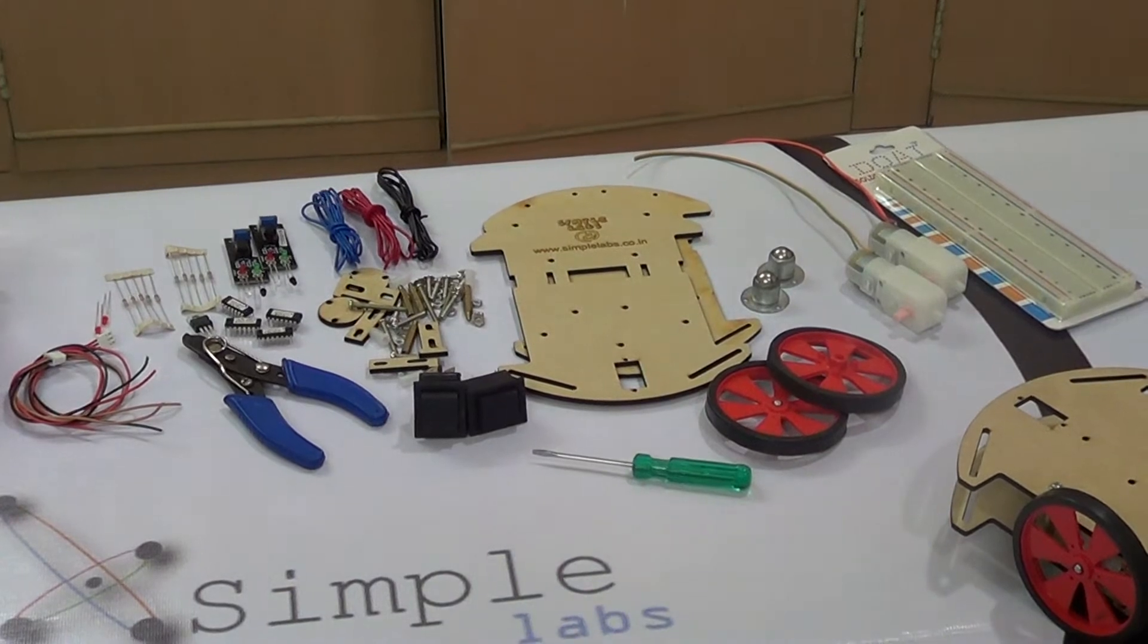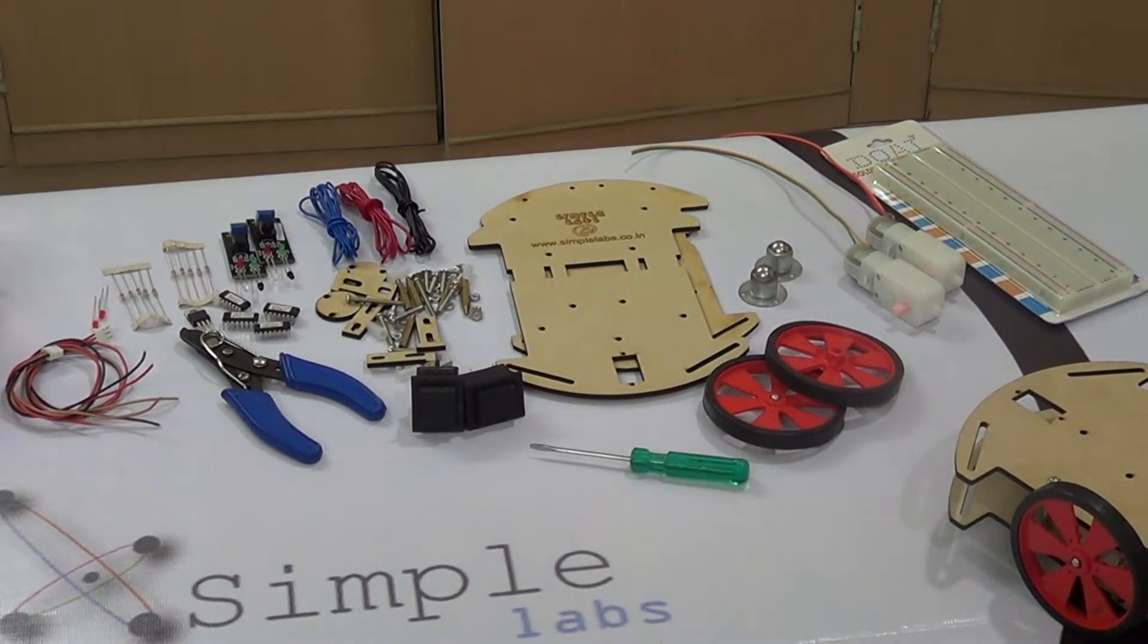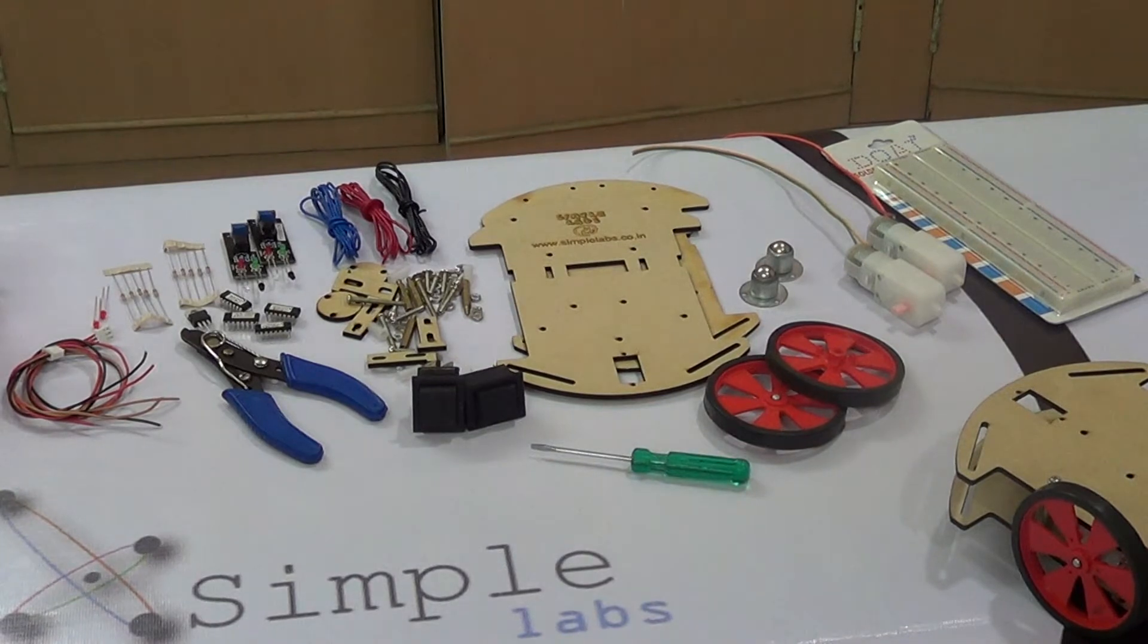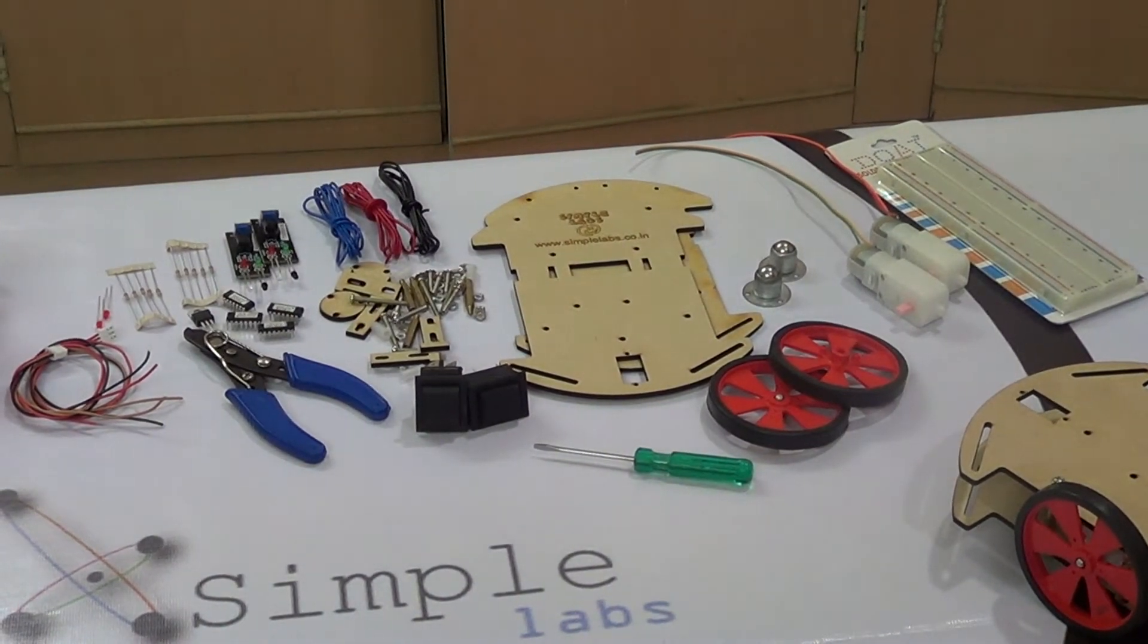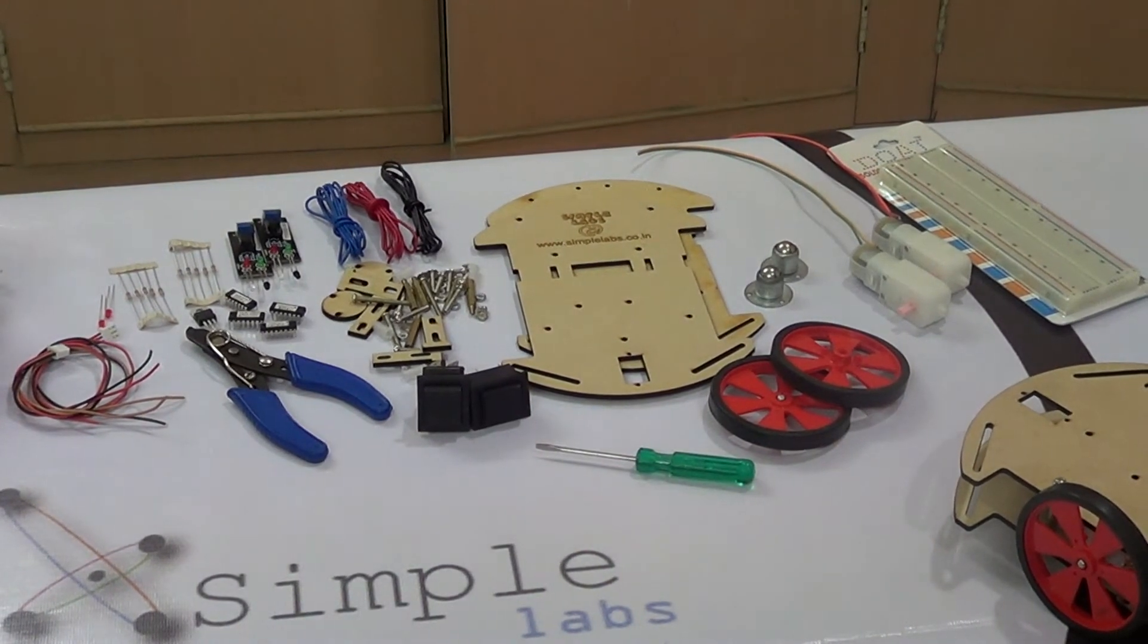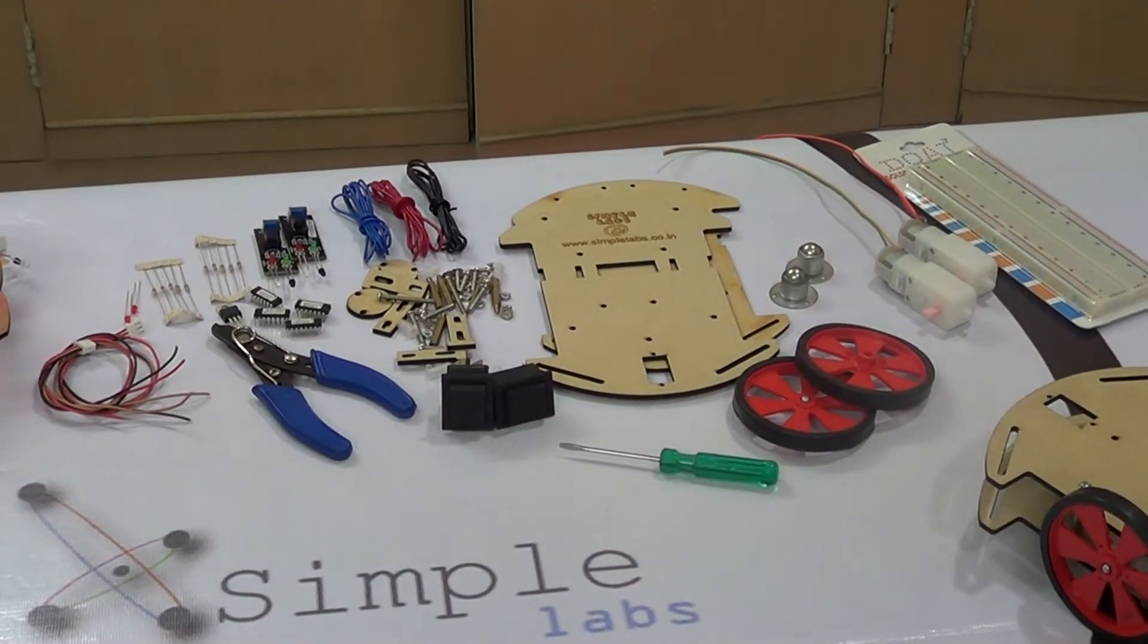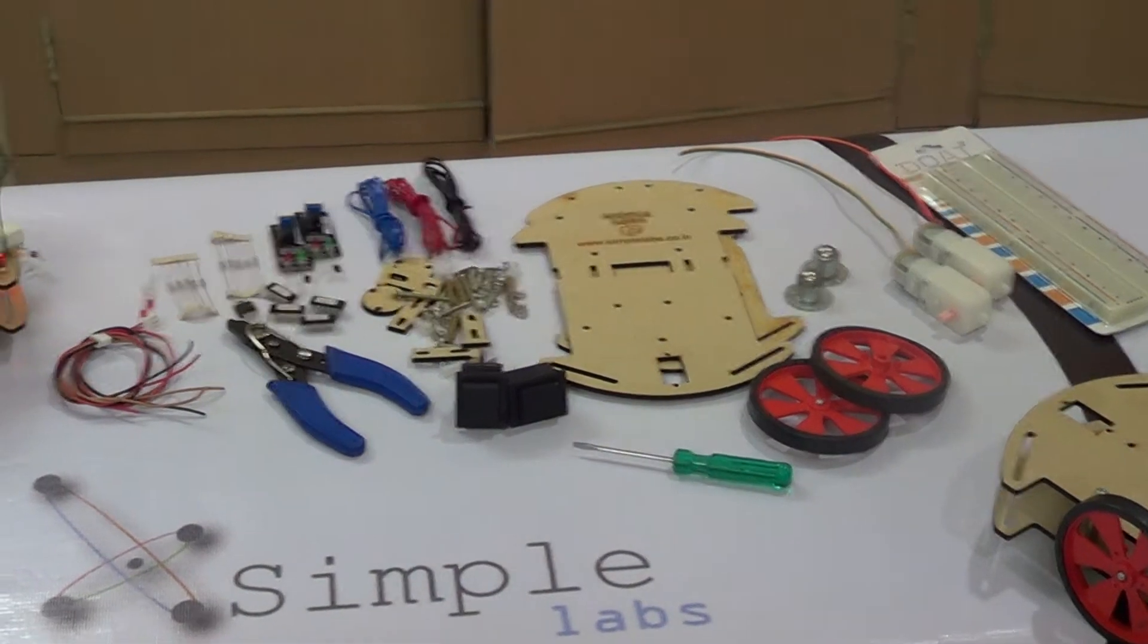You have a breadboard, you have motors, caster wheels, wheels, you have the chassis set, you have DPDT switches, aligner, wire stripper, you have wires, IR sensors, you have some components, ICs, resistors and all, and you have connecting wires.